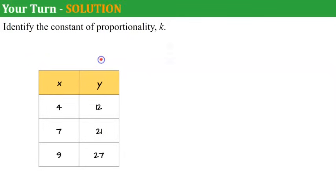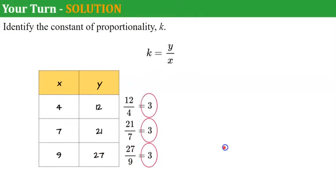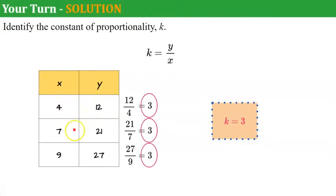Welcome back. Reminding you that k equals the ratio y over x. First entry: y is 12 over x is 4 — that's 12 over 4, which equals 3. Next: 21 over 7, which simplifies to 3. Then 27 over 9, which also simplifies to 3. Since they all simplify to 3, our constant of proportionality k is 3. And to confirm: 4 times 3 is 12, 7 times 3 is 21, and 9 times 3 is 27.